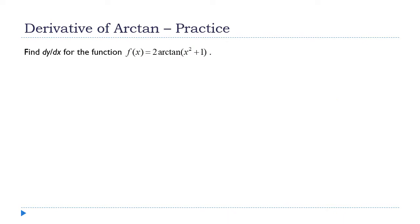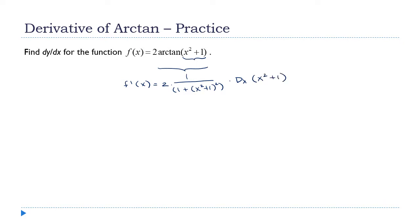Let's work through one more example. This is a chain rule situation: I have an inside function and an outside function. f prime of x is 2 times 1 over 1 plus (x squared plus 1) squared, times the derivative of x squared plus 1. The derivative of x squared plus 1 is 2x; multiplying by the 2 out front gives 4x over 1 plus x to the fourth plus 2x squared plus 1, which simplifies to 4x over x to the fourth plus 2x squared plus 2.